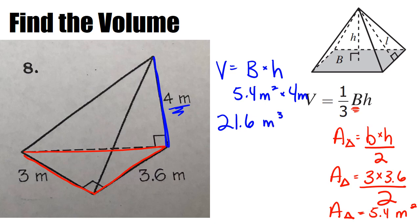But we're not done yet because we have to deal with this one-third. Just like in the other problems, we're going to go ahead and divide what we got by 3. So 21.6 divided by 3 gives you a volume equal to 7.2 meters cubed.